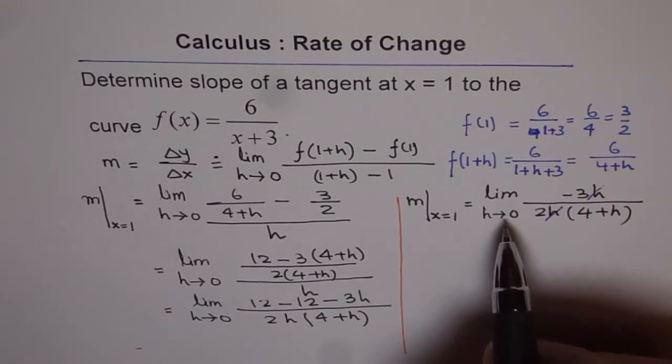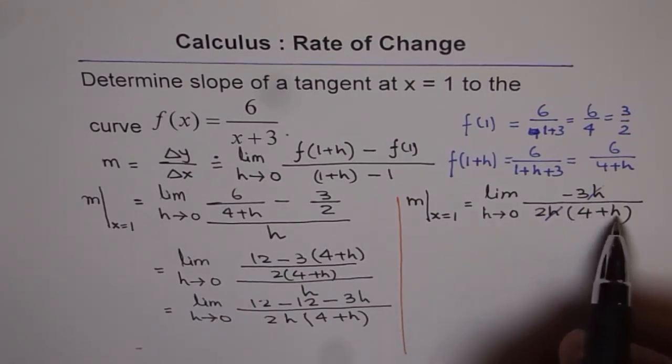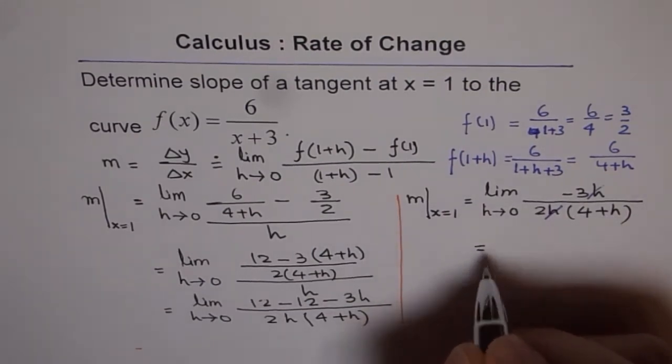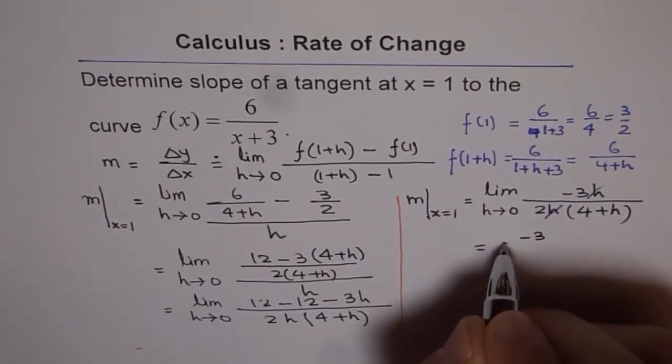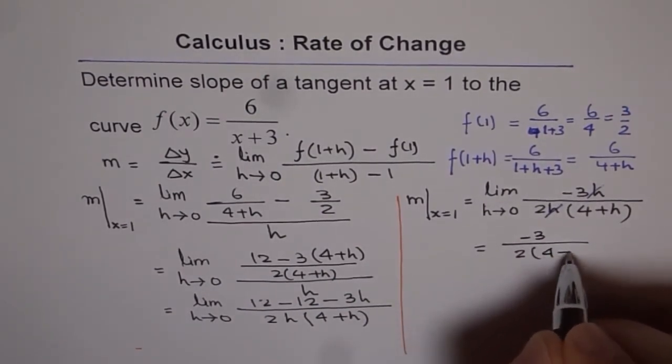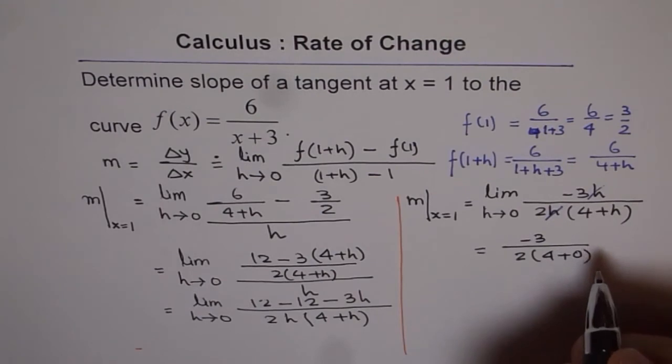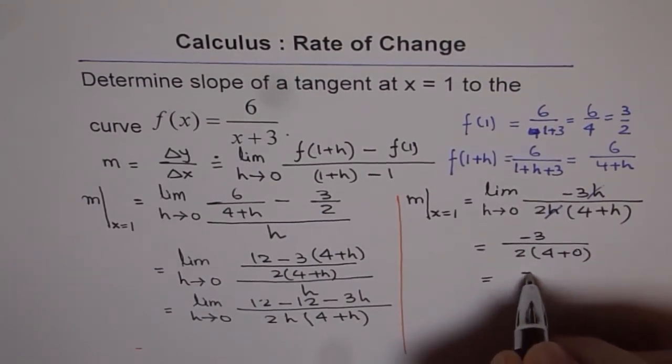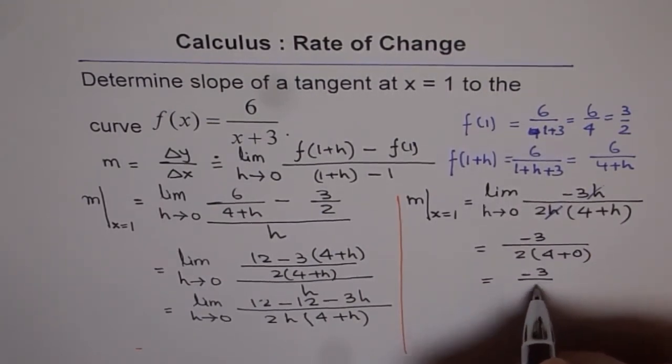So, to estimate the slope of the tangent, let's put h = 0 and see what do we get. Then we get -3 over 2 times 4+0, correct? And that is -3/8.